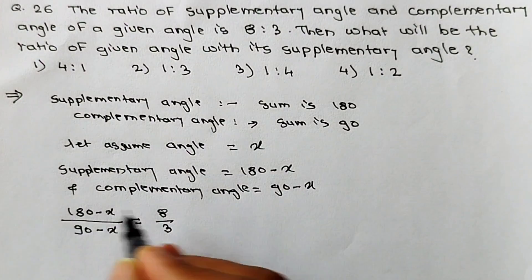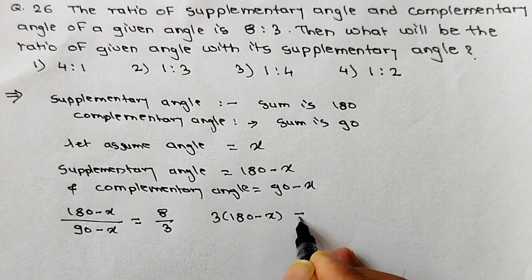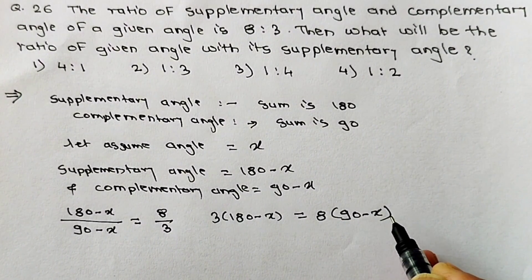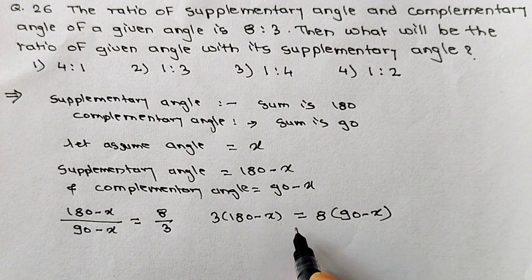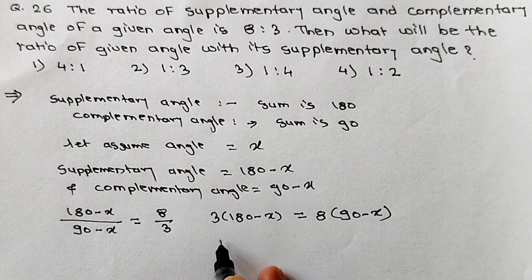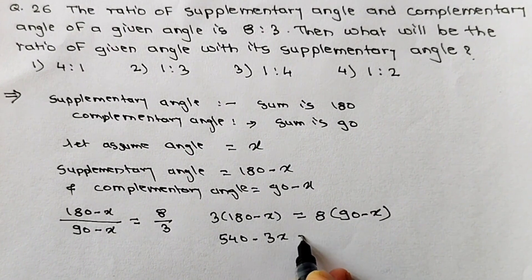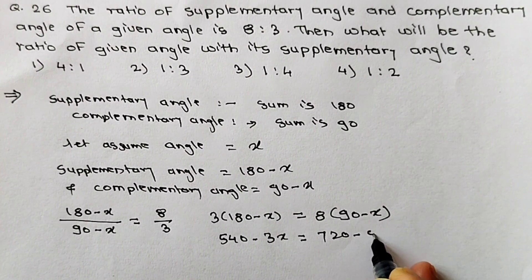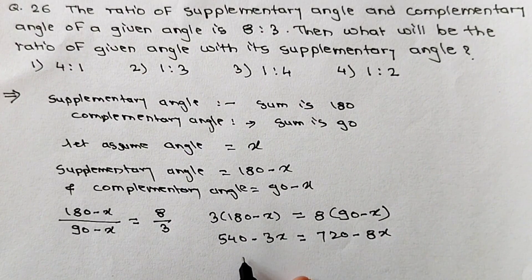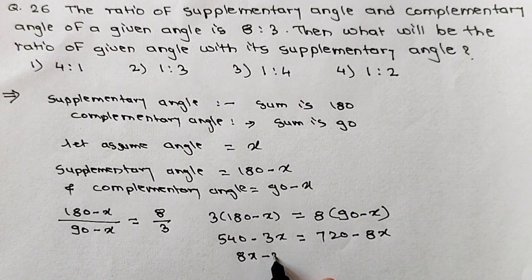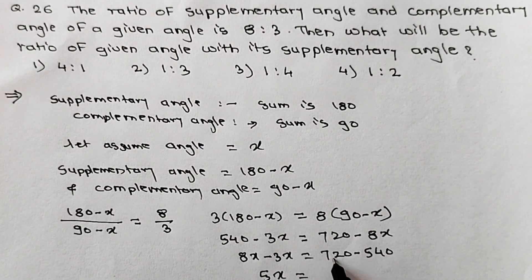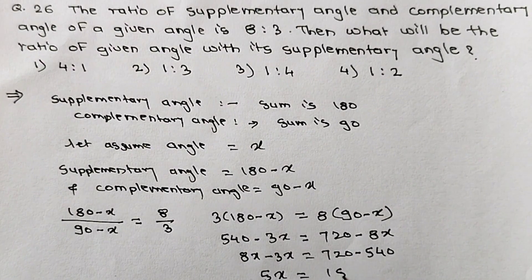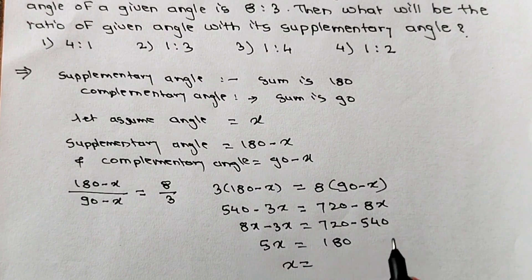Solving this: 3 into (180 minus x) equals 8 into (90 minus x), giving 540 minus 3x equals 720 minus 8x. Transferring terms: 8x minus 3x equals 720 minus 540, so 5x equals 180. Therefore x equals 180 divided by 5, which gives us 36. So the angle is 36 degrees.